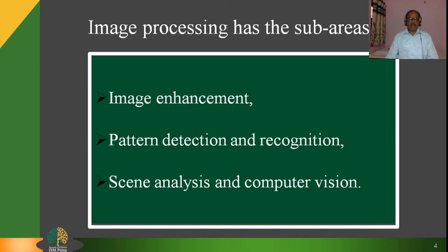A particularly important example is optical character recognition, popularly known as OCR technology, which allows for the economical bulk input of pages of typecast, typewritten, or even handwritten characters. The next sub-area is scene analysis and computer vision, which allows scientists to recognize and reconstruct a three-dimensional model of a scene from several two-dimensional images. In industries, robots sense the relative sizes, shapes, positions, and colors of parts on a conveyor belt.